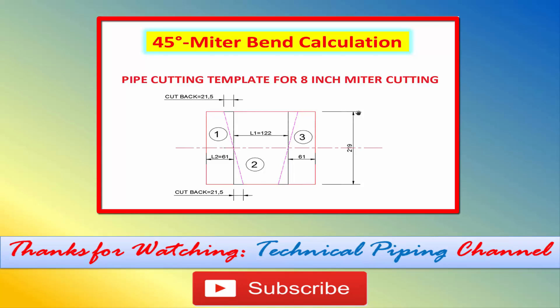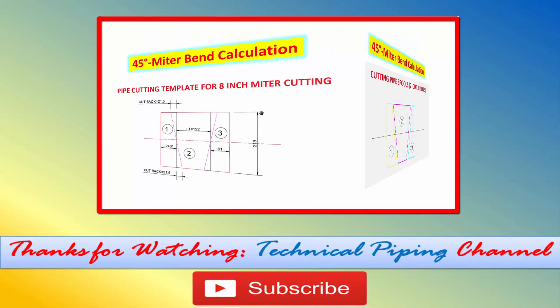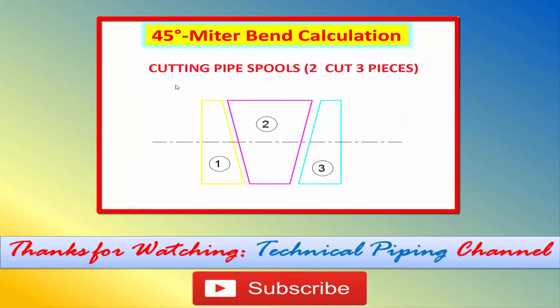Take pipe and mark the L1 and L2 distance using measurement tape, and mark the cut back distance as shown in the picture. Now you have three pieces of pipe spools.